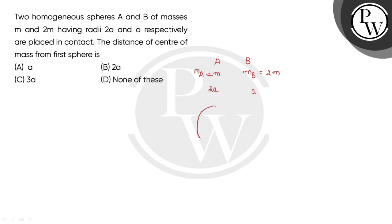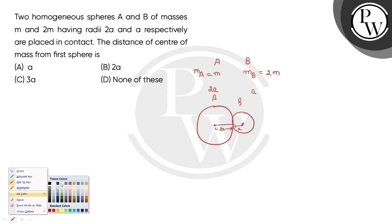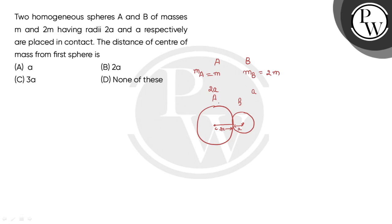So we have sphere A with radius 2A, and sphere B in contact with it, whose radius is A. Now let's find the distance of the center of mass from the first sphere. We need to find the center of mass from the first sphere.